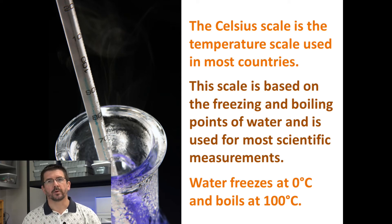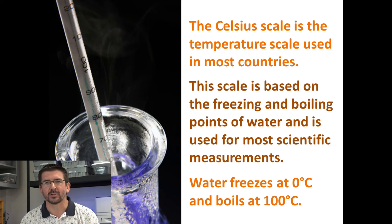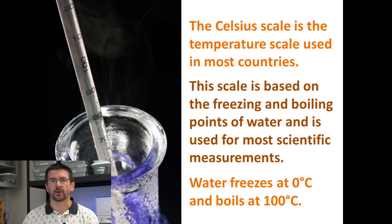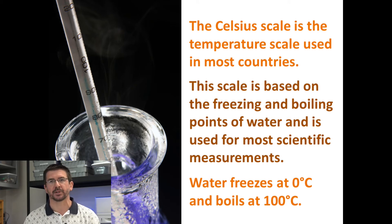The Celsius scale works really well for scientific measurements, and for lab activities we'll be using the Celsius scale. It's based on the boiling point and freezing point of water, which makes it convenient for science. On the Celsius scale, water freezes at zero degrees — that's the same temperature as 32 degrees Fahrenheit. Water boils at 100 degrees Celsius, which equals 212 degrees Fahrenheit. They're different numbers because they're different scales, but those two temperatures are equal.